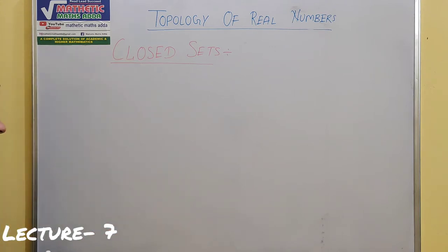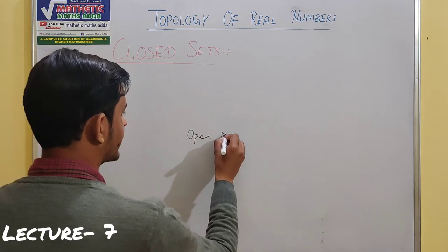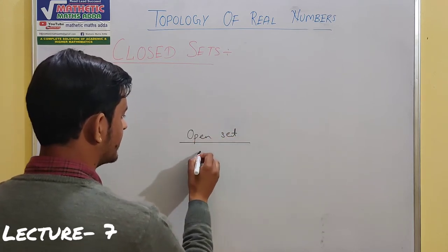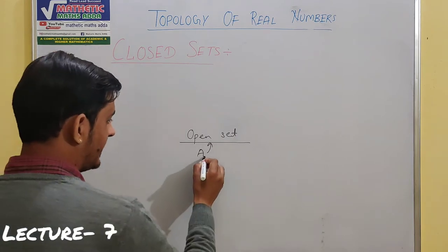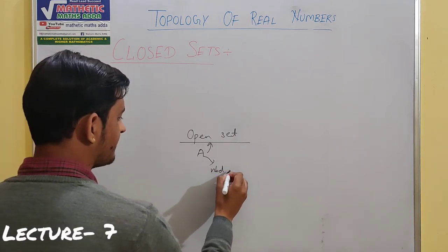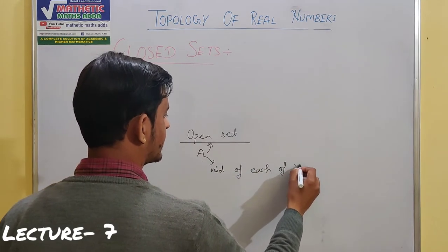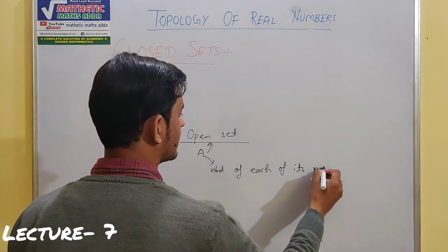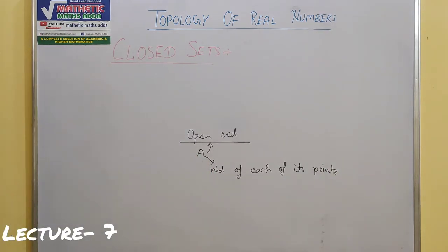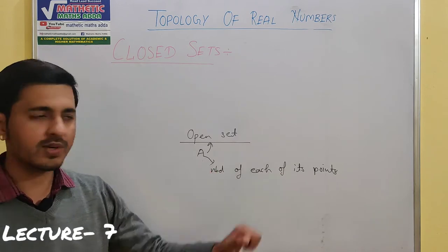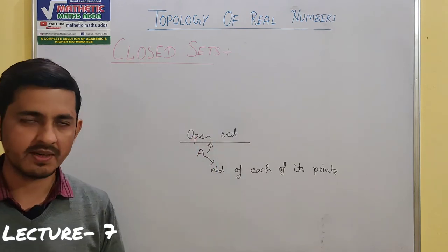Let's talk about Open Sets. When do we call any Set A an Open Set? A should be a neighborhood of each of its points. If A is acting as a neighborhood for all the points contained within A, then we call that A an Open Set.